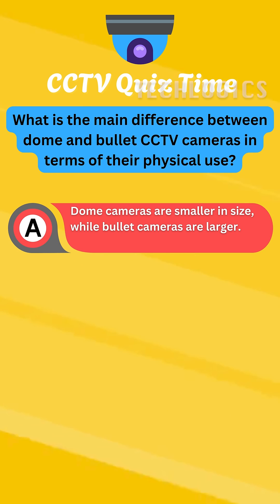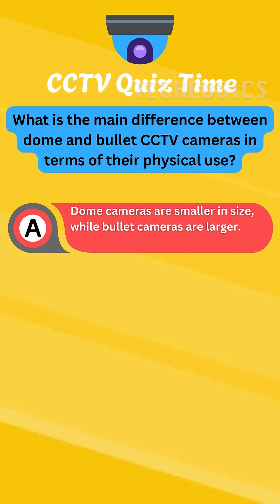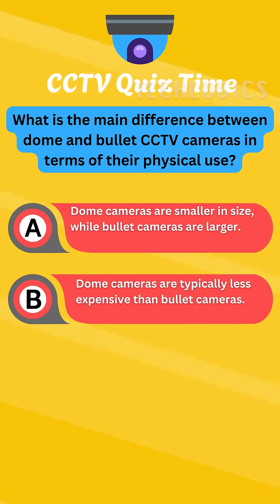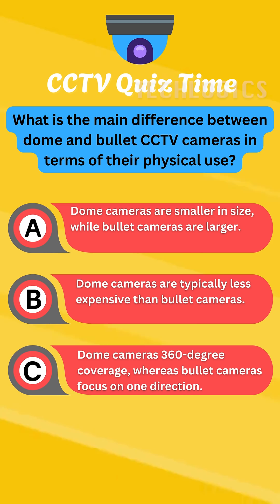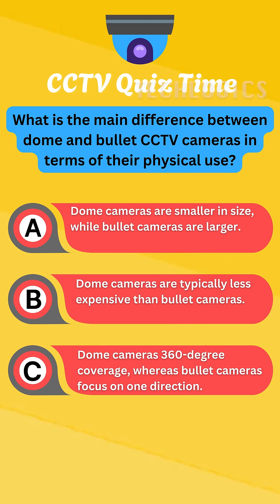A. Dome cameras are smaller in size, while bullet cameras are larger. B. Dome cameras are typically less expensive than bullet cameras. C. Dome cameras provide 360-degree coverage, whereas bullet cameras focus on one direction.